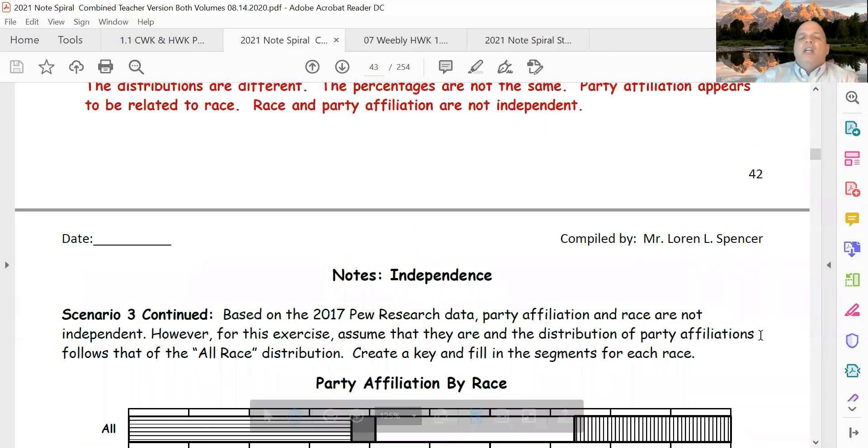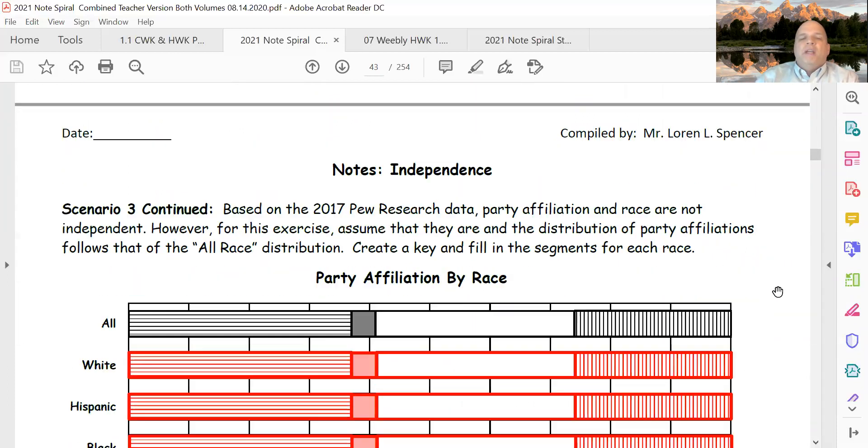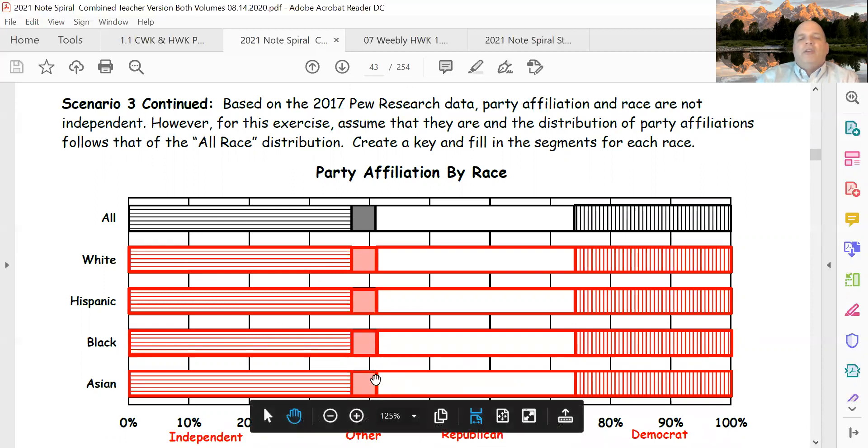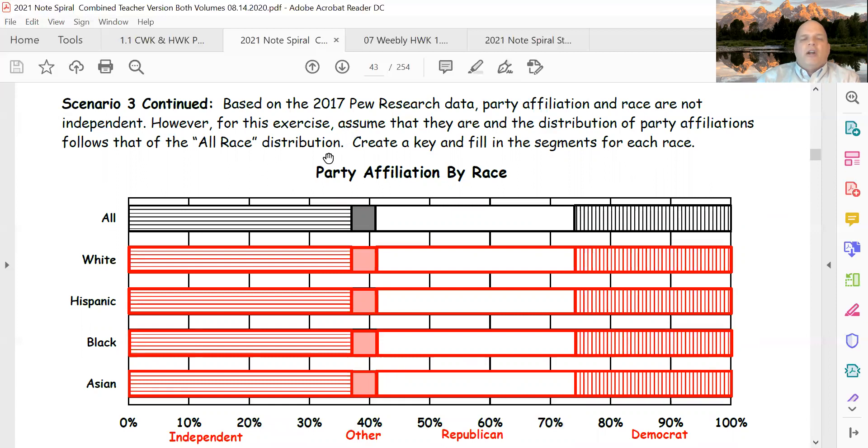Here they gave us the all race distribution. If they are independent, which they told us they were, then all of them should be exactly the same. We don't know how many white people there are, we don't know how many Hispanic people there are, but the proportions would be the same across every single race if party affiliation is independent of race.